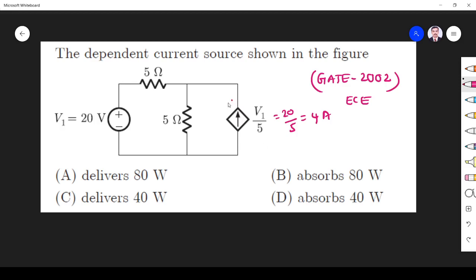So the first thing is it supplies or delivers the power. So these two options are wrong. Absorption is wrong, only delivering. Since current is coming out of the positive terminal, current flows out, so it is delivered power. First thing we must understand.